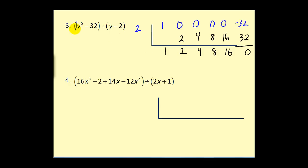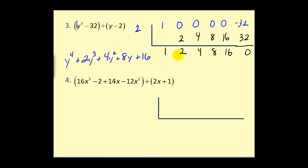Degree five divided by degree one gives a degree four quotient. So we have y to the fourth plus two y to the third plus four y squared plus eight y plus sixteen, with a remainder of zero.